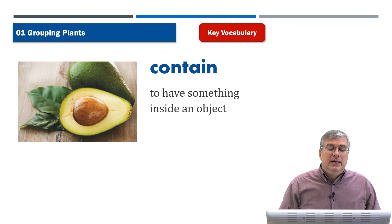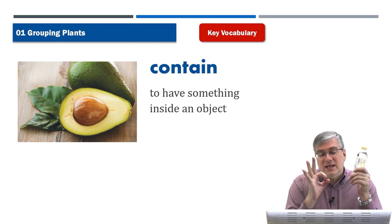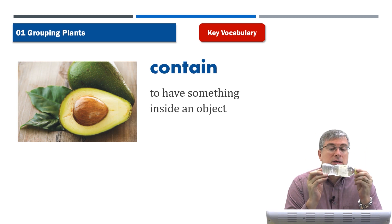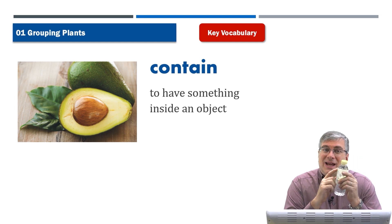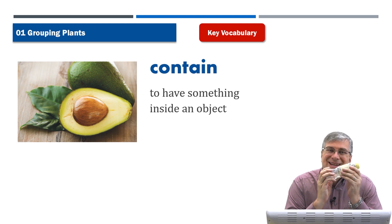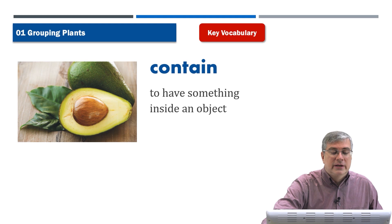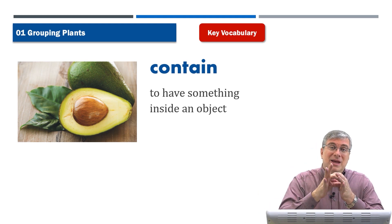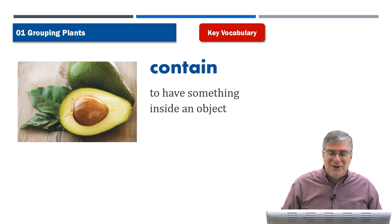Next we have 'contain,' which means to have something inside an object. For example, there's a seed inside an avocado — the avocado contains a big seed. But 'contain' doesn't just apply to natural things. I have a plastic water bottle — the plastic bottle contains water. That's what contain means: to have something inside of an object. Avocados are also great for making guacamole, by the way!